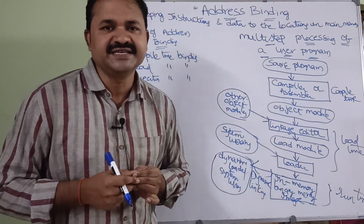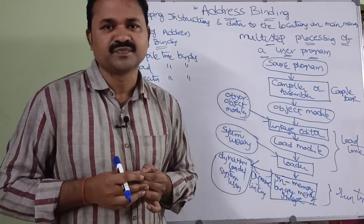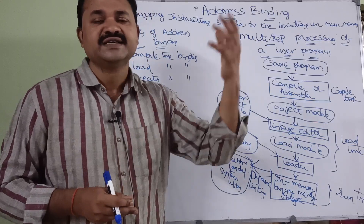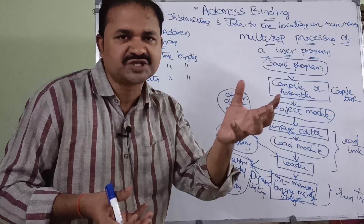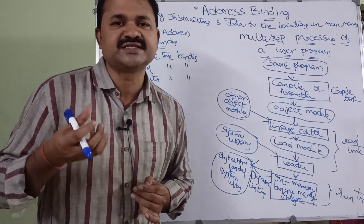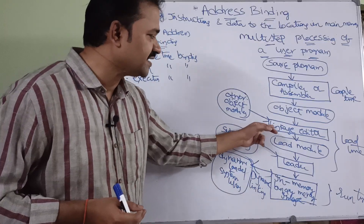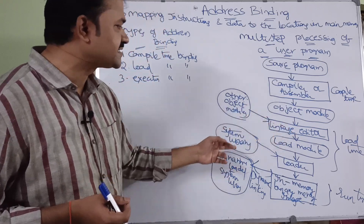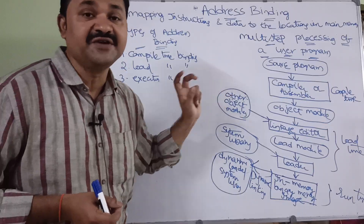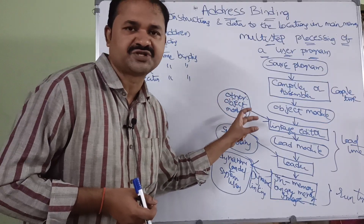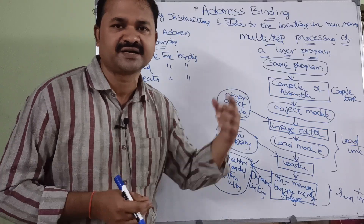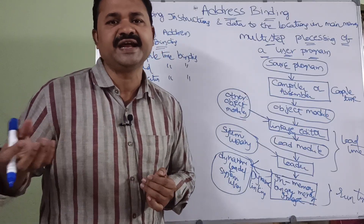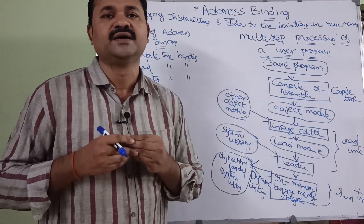That object file is passed to the linkage editor, which is the linker. The linker links object code of several library functions and several files, combines all those object code files, and produces an executable file. Other object modules — several object files — are combined and an executable file is generated.